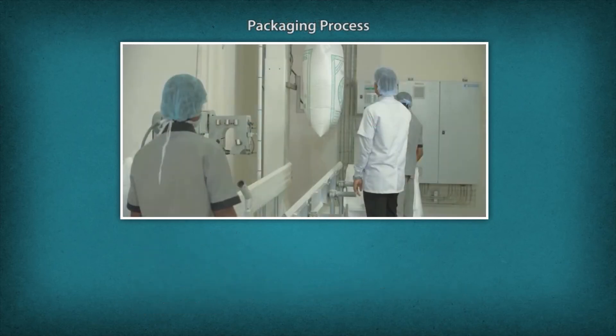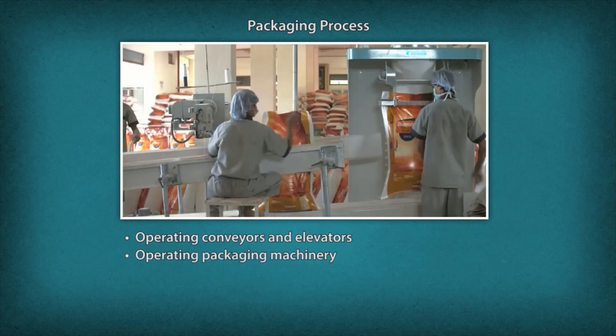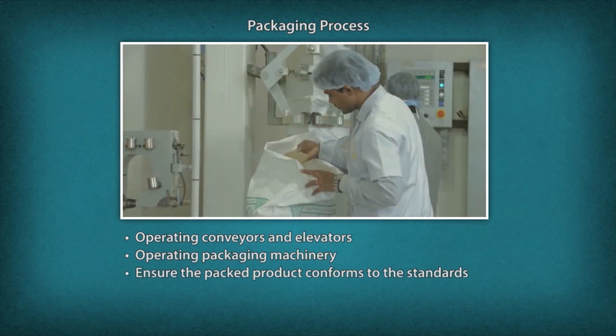Packaging process. A grain mill operator performs the following tasks during the packaging process: Operate conveyors and elevators to transfer processed grain to packing machine. Operate packaging machinery by setting the batch code, date coding and filling, quantity, etc. Assess the weight of the packaged product to ensure conformance to standards.